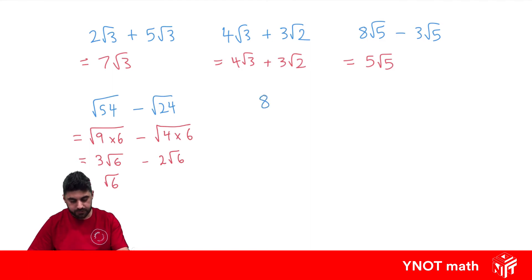We've got one more. 8 root 10 plus 4 root 5 minus root 90. Well, again, we have no like surds to begin with, but this surd can be simplified.